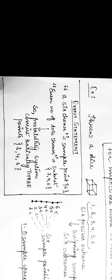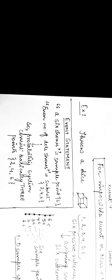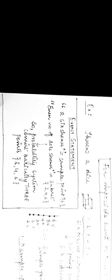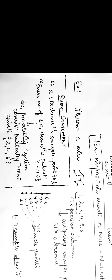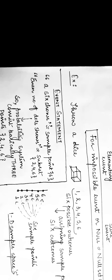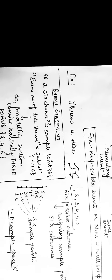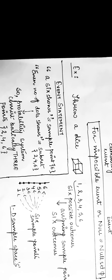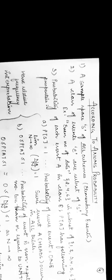Coming to the concept of an event: if an event shows that the sample point is denoted by 6, and if we talk about the even number of dots, then we can represent it as 2, 4, and 6 — and these are known as subsets. So the probability system consists basically of the points 2, 4, and 6.